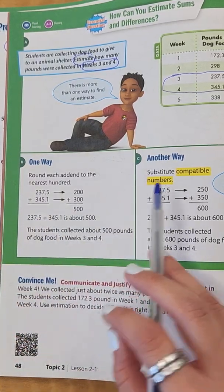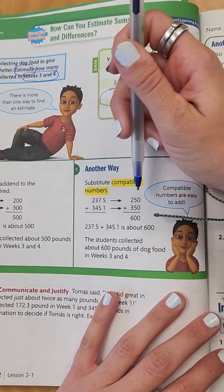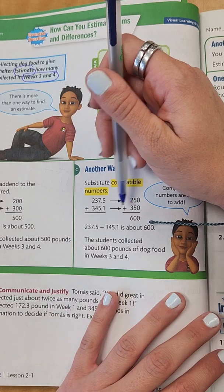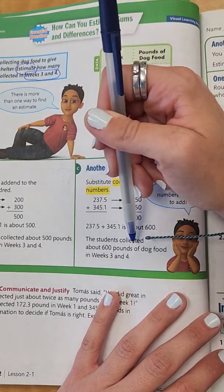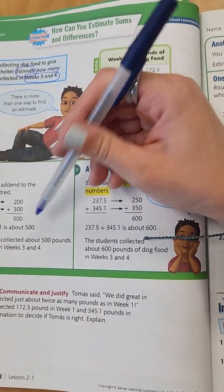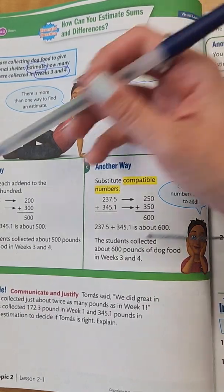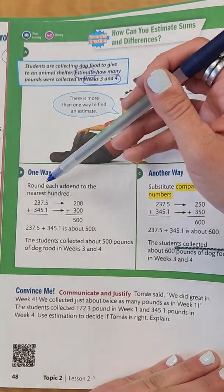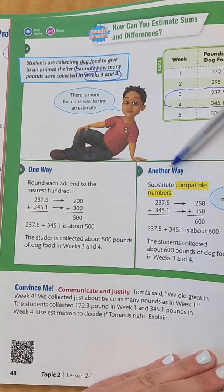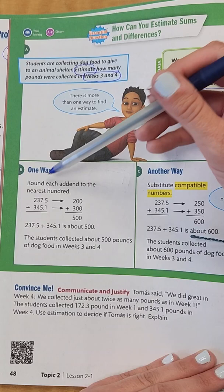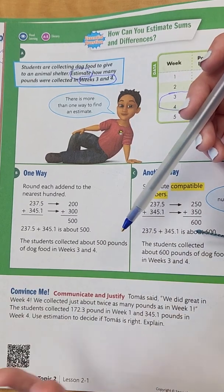The other way is through compatible numbers. With that, you'd estimate 237 as close to 250, and 345.1 as close to 350. That gives about 600 pounds — about a hundred more. Both methods work. I lean more toward compatible numbers because there's only one thing I'm adjusting to make it easy, but that's a personal preference.